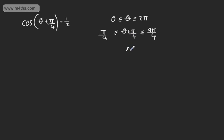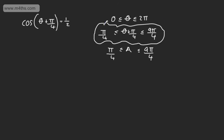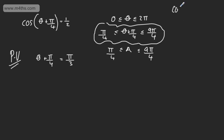You could make a substitution and solve for cos A equal to half, where A is between pi by 4 and 9 pi by 4. I just want to find a principal value for theta plus pi by 4 and subsequent solutions. So theta plus pi by 4 equals the inverse cosine of a half. That's one of our special angles: pi by 3 radians, or 60 degrees. The cosine function satisfies cos theta equals cos of 2 pi minus theta, and also cos of 2 pi plus theta.